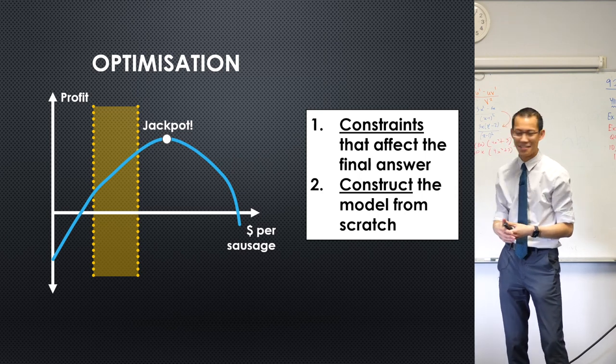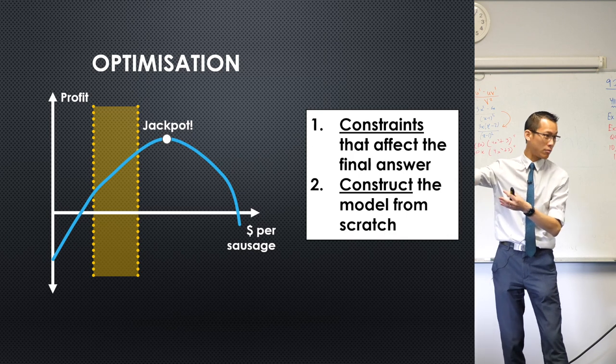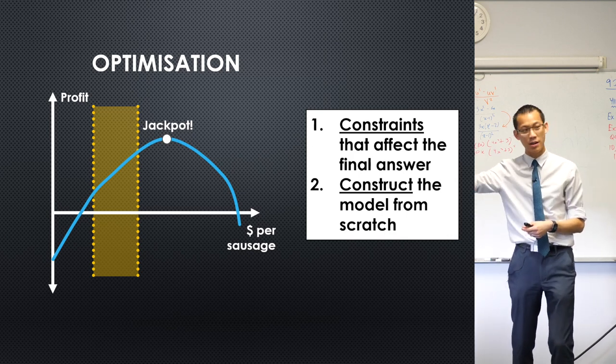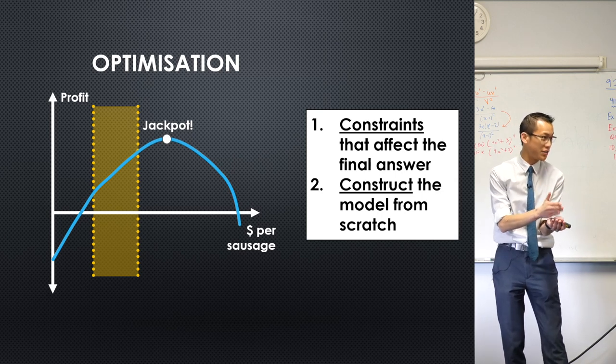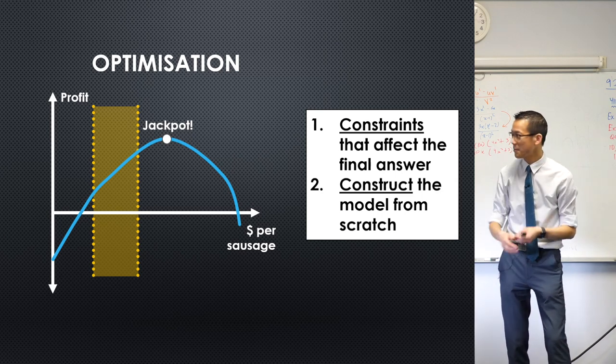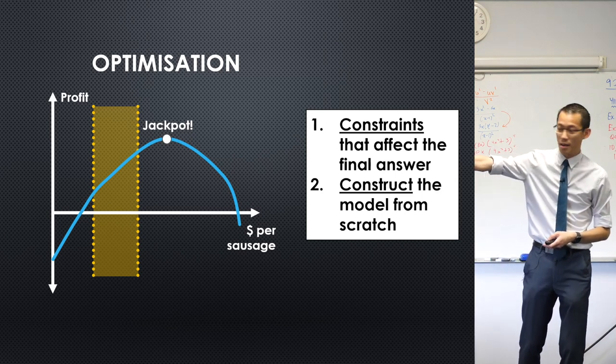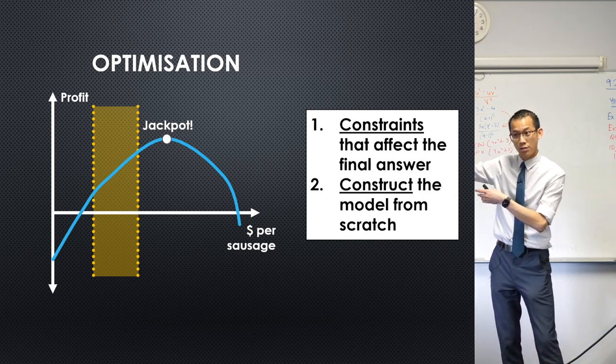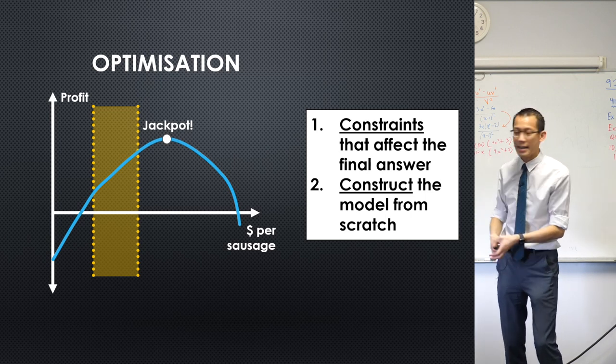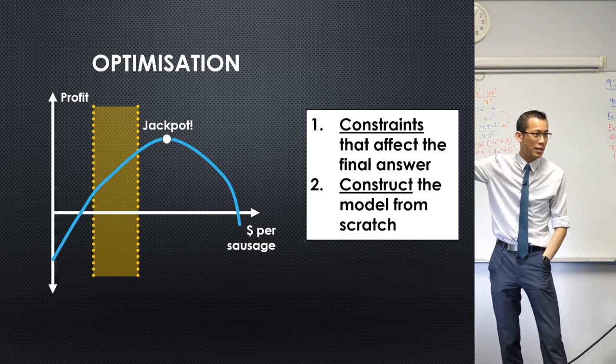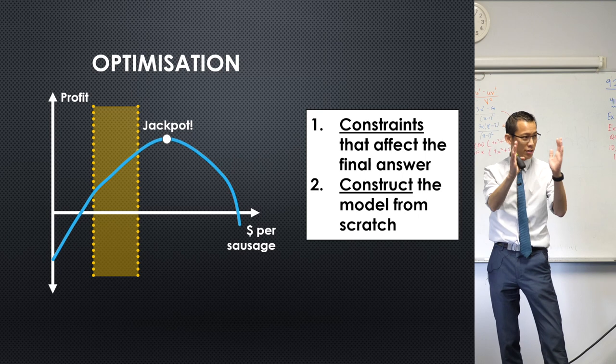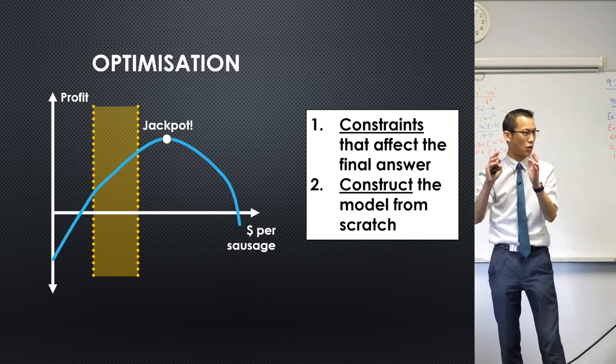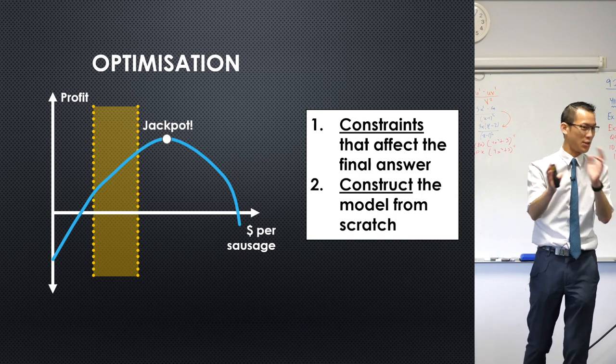For example, this is a hyper example, but if you are running a Bunnings barbecue, you can't just charge, you know, I'm going to charge 10 bucks or 50 cents, right? They actually are very stringent about how much you can charge, right? So there may be constraints that make you say, okay, you're only allowed to charge this much, so therefore you have to change your decisions, right? Now have a look at my situation here. Suppose this orange section is where you're allowed to charge. It's like I'm going to restrict your dollars per individual sausage sale, right?